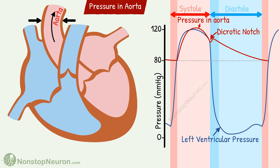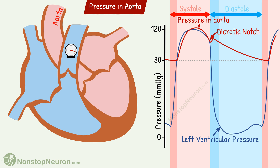This completes one cycle. The next cycle begins with ventricular systole. After isovolumetric contraction, the aortic valves open and there will be a rise in pressure again. So this is aortic pressure during a cardiac cycle. The pressure curve in the pulmonary artery is similar but the values are lower. The minimum pressure in the pulmonary artery is about 7 mmHg, and the maximum pressure is about 25 mmHg.